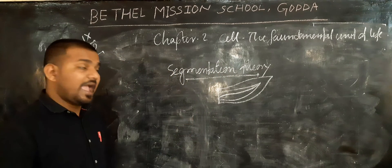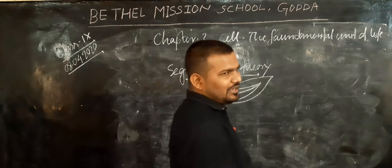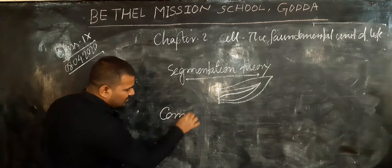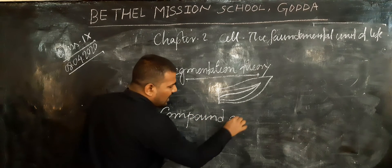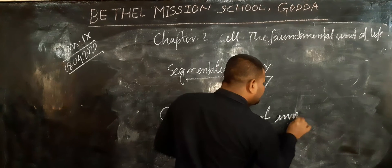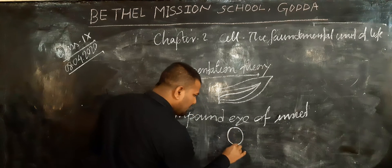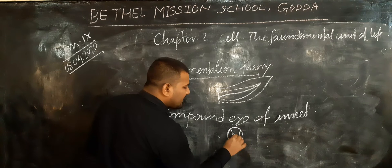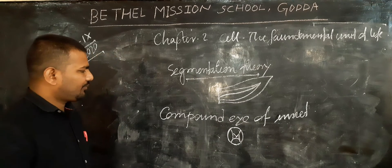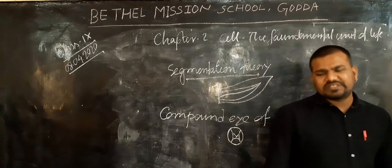This theory was put forward by Aristotle. After that, Galileo was the first scientist to observe the compound eye of insects. Behind the structure of a compound eye, Galileo found a similar type of segment, and this segment is repeated to form the whole part. Galileo also supported the segmentation theory.